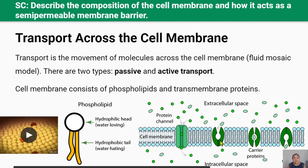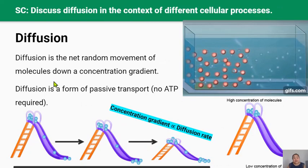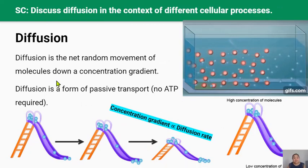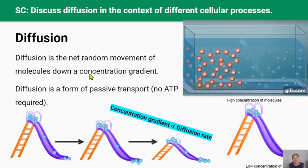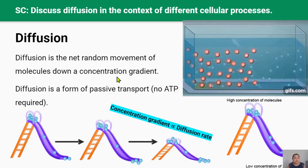Some carrier proteins need energy to transport molecules, and the most famous carrier protein is known as the sodium-potassium pump. But sometimes these proteins aren't even needed at all — sometimes molecules can just pass straight through the cell membrane. One of these types of cell transport is called diffusion. It doesn't need a transmembrane protein to transport molecules across the cell membrane.